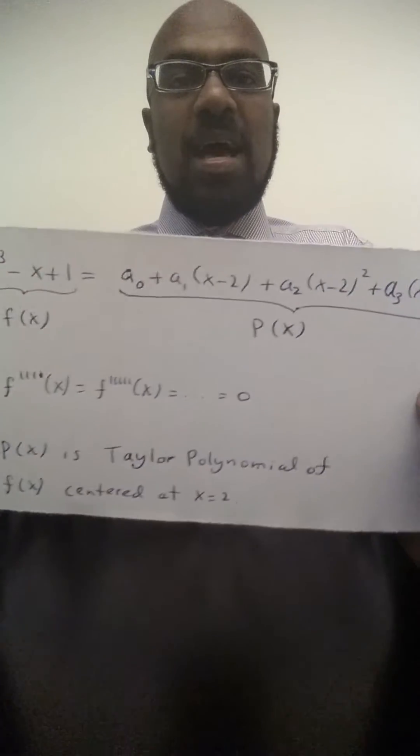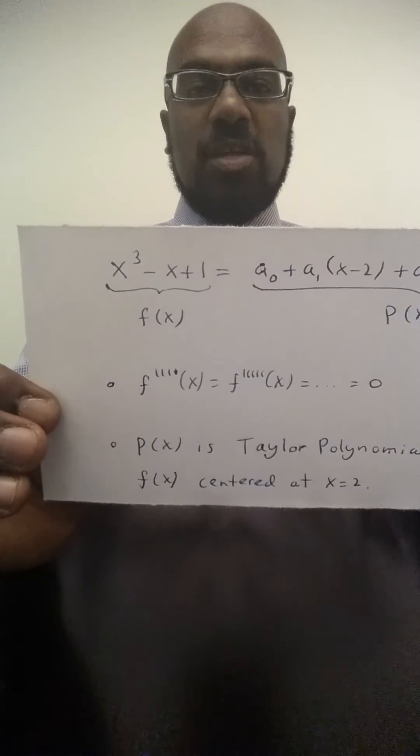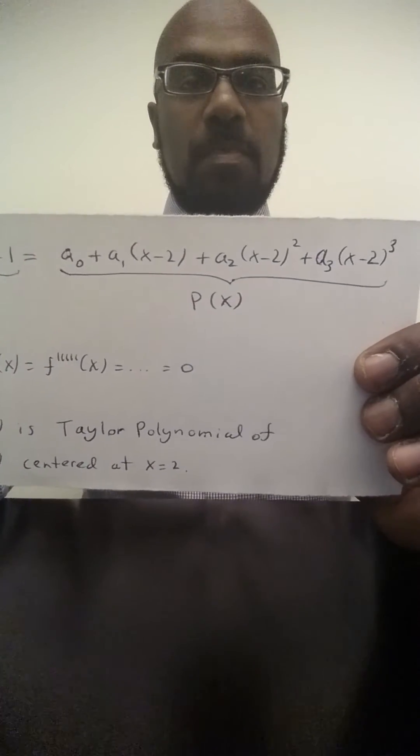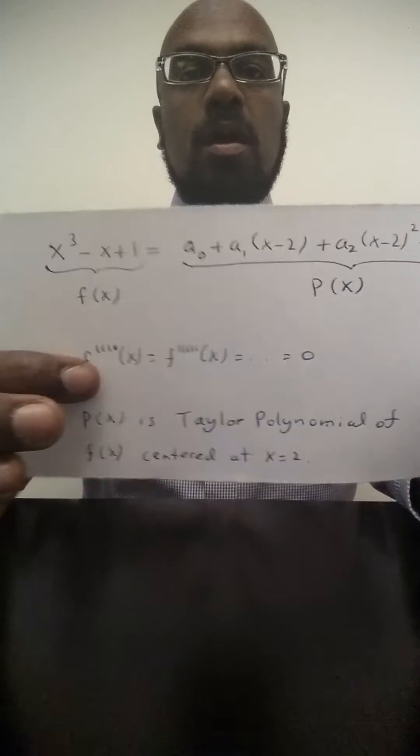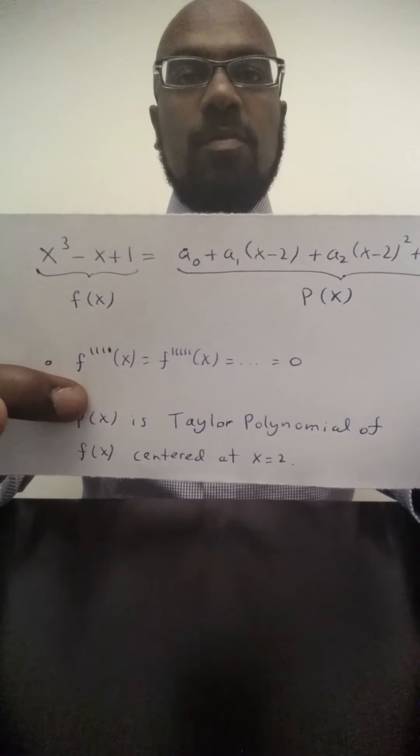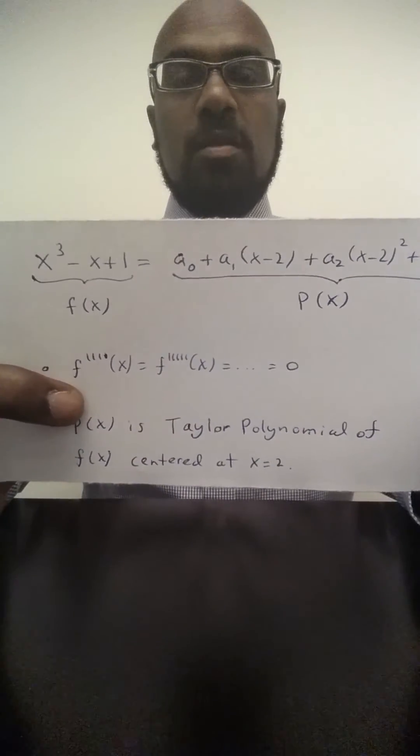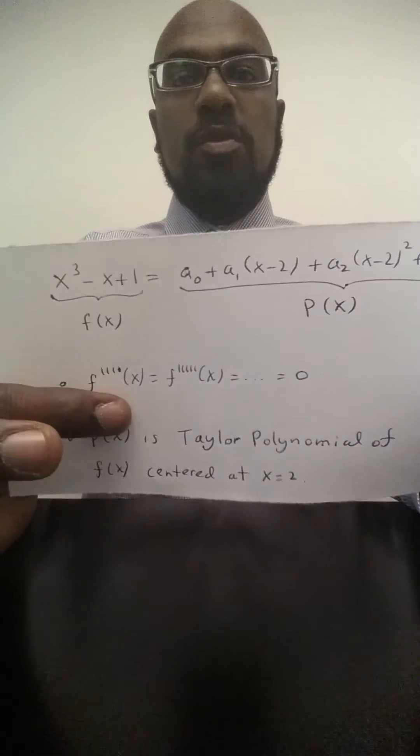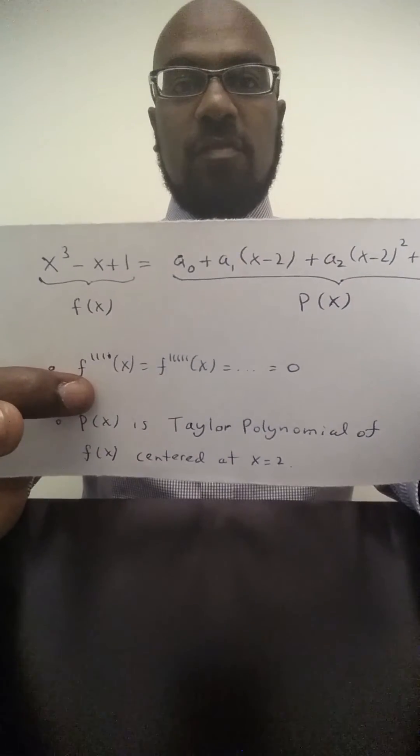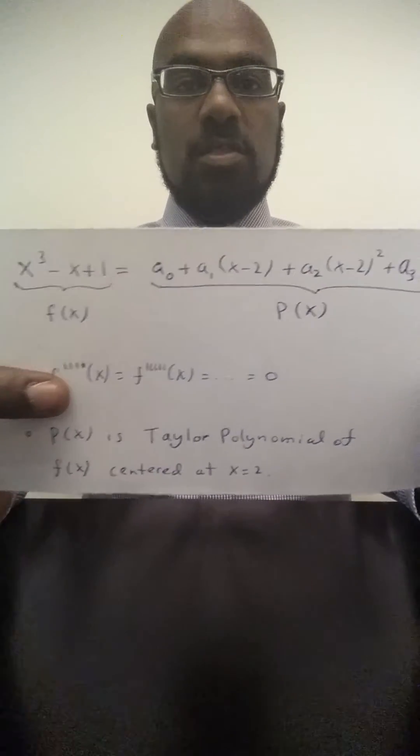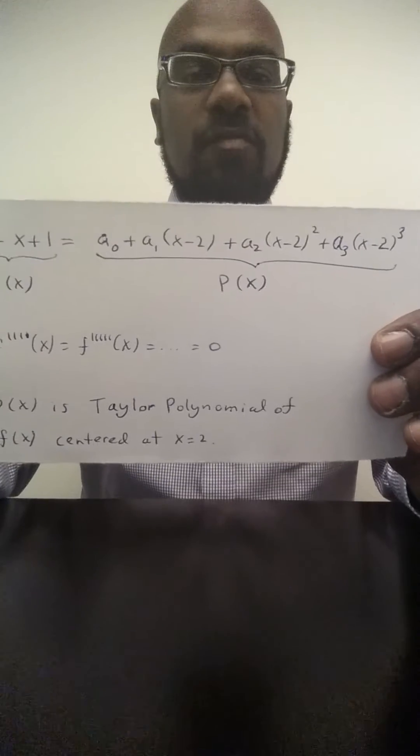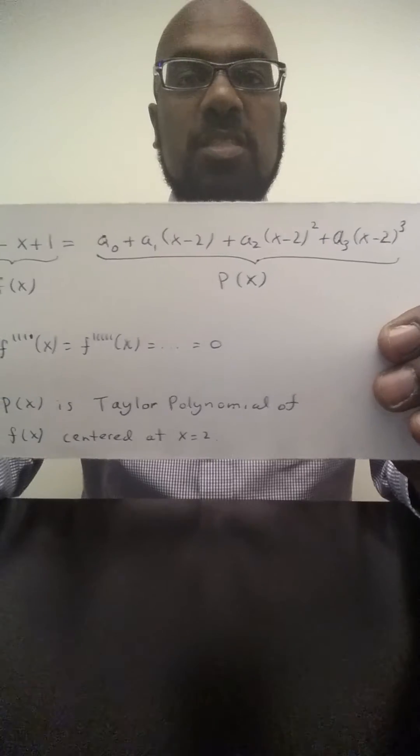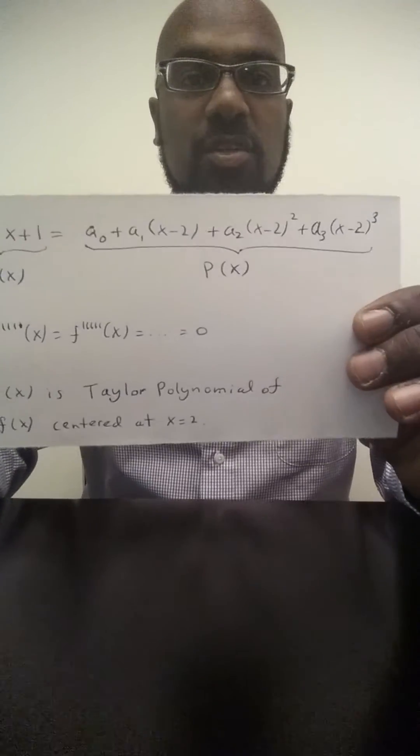So that means, in fact, if you look at the Taylor series expansion of f(x) centered at x equals two, any term beyond the degree four coefficient is going to be zero because the derivative, the fourth derivative of the function, fifth derivative, etc., they're all zero. So in fact, this expression p(x) is the Taylor series expansion of f(x), centered at x equals two.